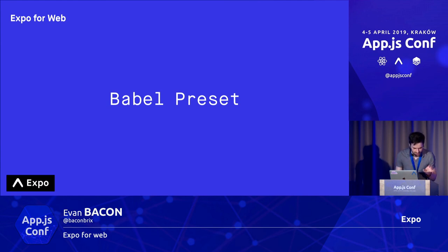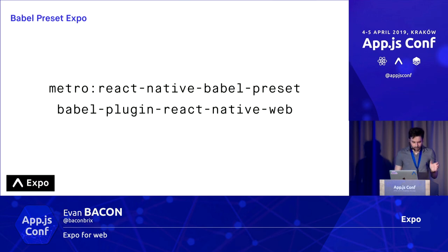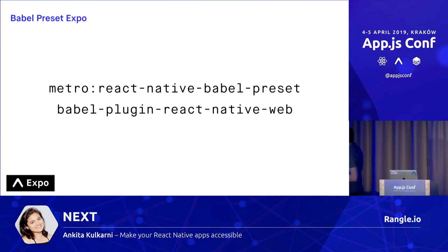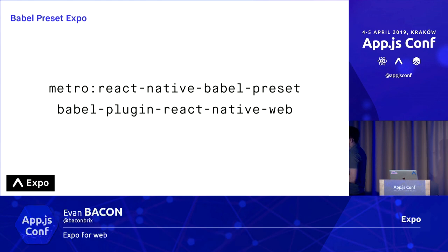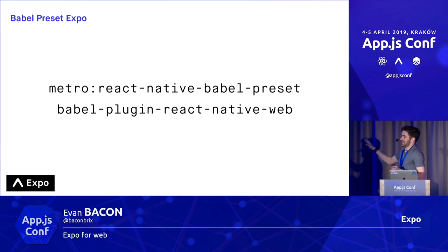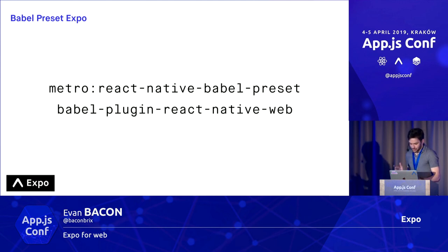The next big thing is the Babel preset. This is a very important part in making an effective and streamlined website. By default, you're going to be using the React Native Babel preset if you're making a React Native init app. There's also Babel plugin React Native for Web, which will convert your code for web to tree shake certain things, but not everything. So we made Babel Preset Expo, which you don't have to use — you can just use those others and won't get any of the features I'm about to show you.